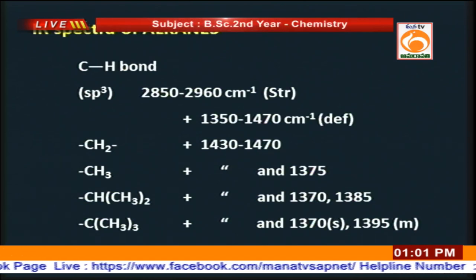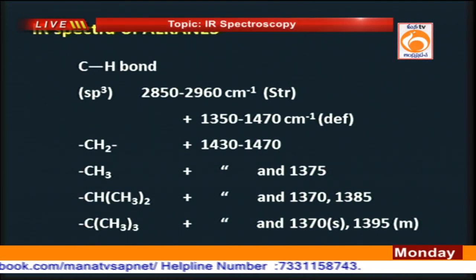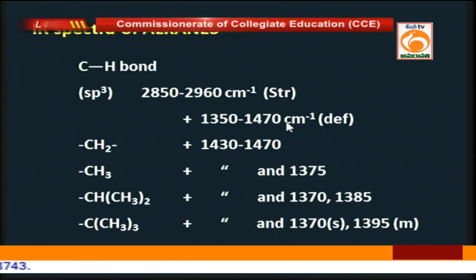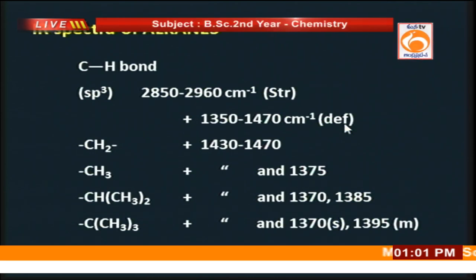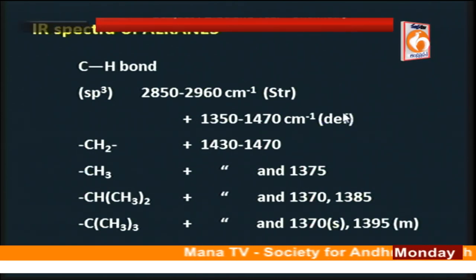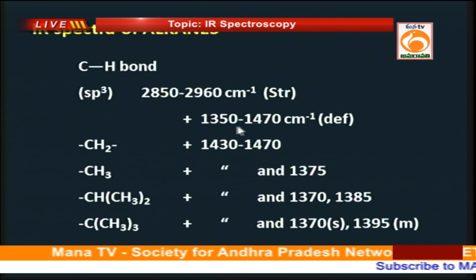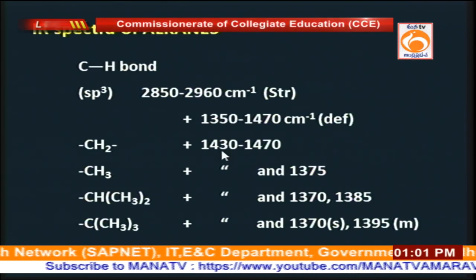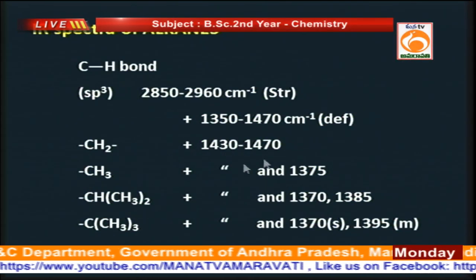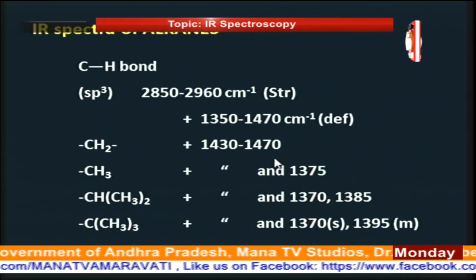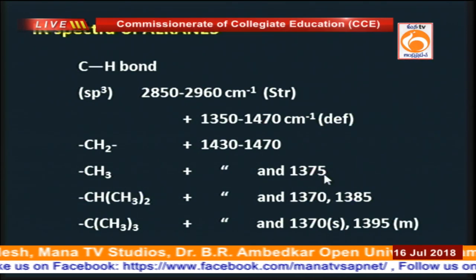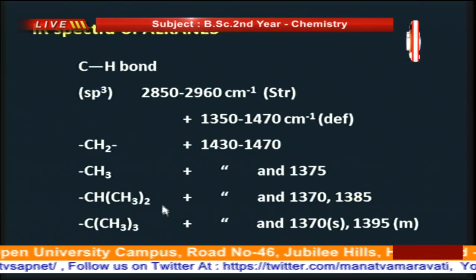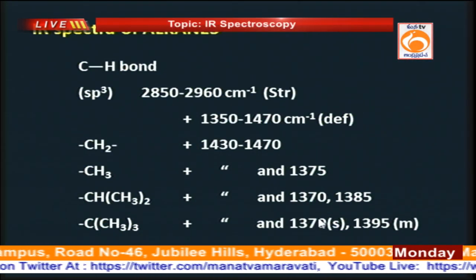Now let us discuss the IR spectra of alkanes. For alkanes, the C-H stretching frequency is in the range of 2850 to 2960 cm⁻¹, whereas for the bending (deformation) bands the range is 1350 to 1470 cm⁻¹. If there is a methylene (CH₂) moiety, we observe a peak in the range of 1430–1470 cm⁻¹. If there is a methyl moiety, we observe a band at ~1375 cm⁻¹ and also in the range 1430–1470 cm⁻¹. For an isopropyl system, we observe characteristic values.